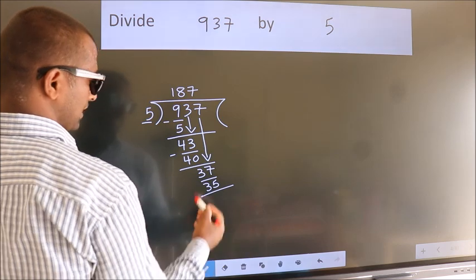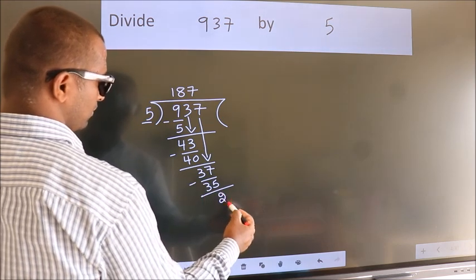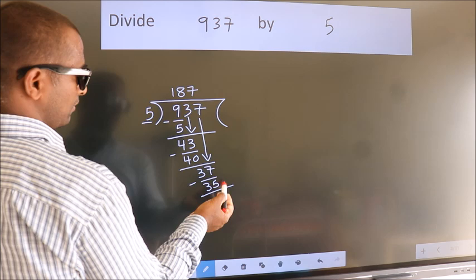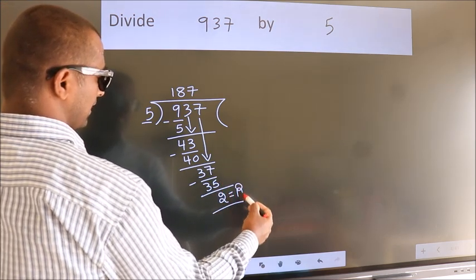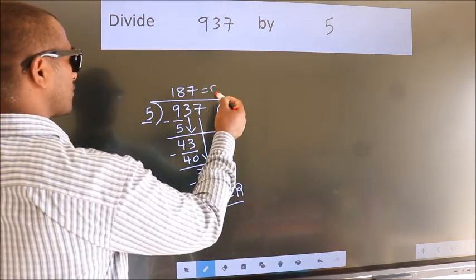Now we subtract, we get 2. No more numbers to bring down, so we stop here. This is our remainder, this is our quotient.